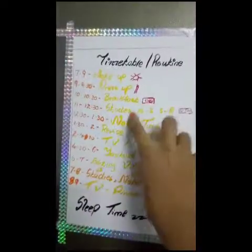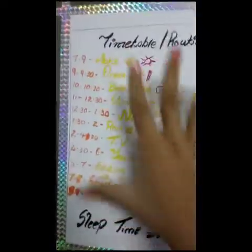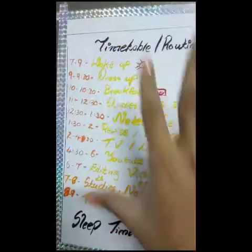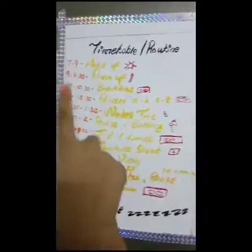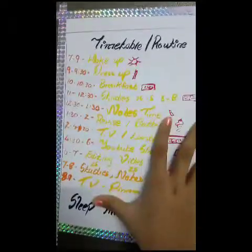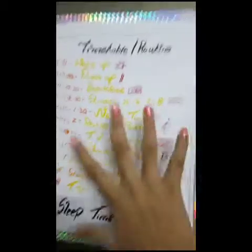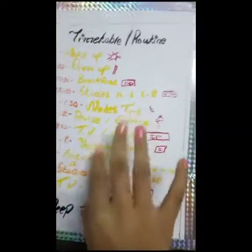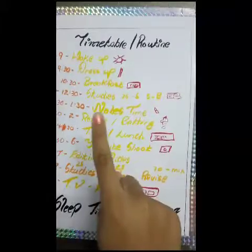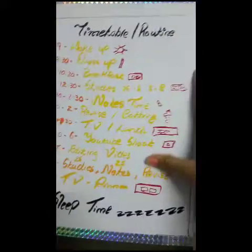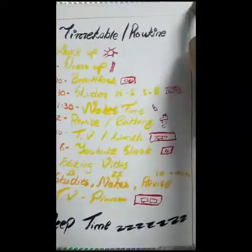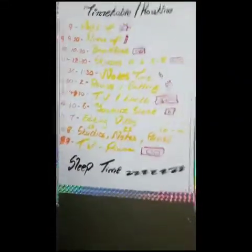First of all, this routine and timetable is just for one week — from June 1 to June 6 — because on June 7 my online classes are starting. So I don't think I'm going to re-filter these times into other slots once my online classes begin.